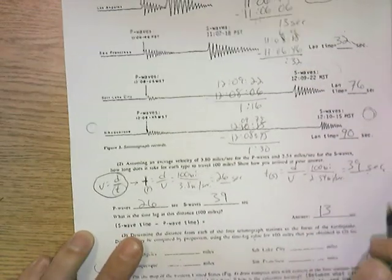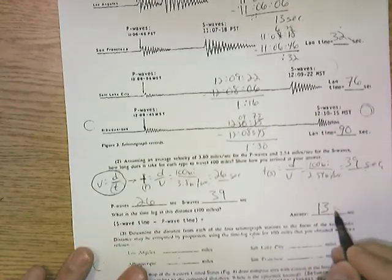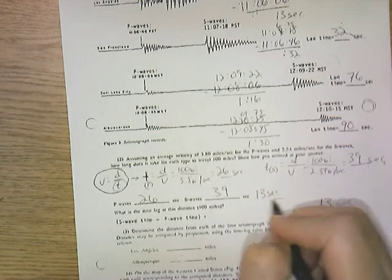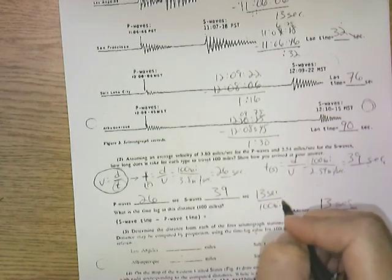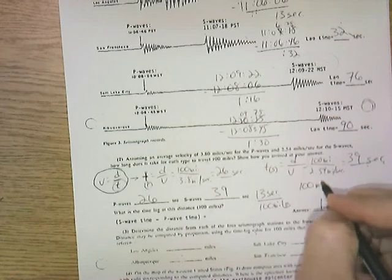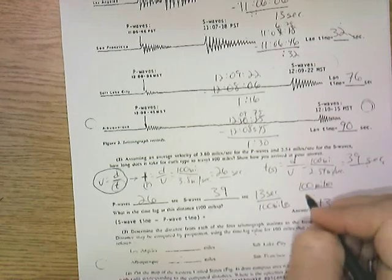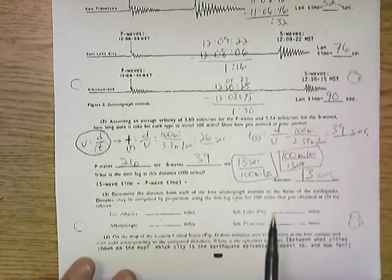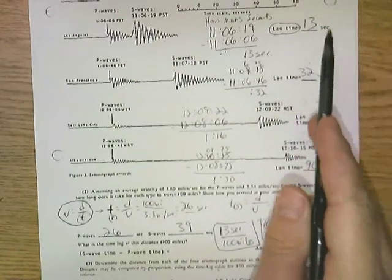So now I can solve, what is the lag time at this distance of 100 miles? The lag time is the difference between the P and the S, so 13 seconds. And as a result of this I can now use this proportion. I know it takes 13 seconds lag time to travel 100 miles, so I have these values here that I can use. I'm setting it simply as a proportion. Now we are assuming that the velocity is going to travel at a constant, it's not going to be changing, but when we're talking short distances we can assume that.